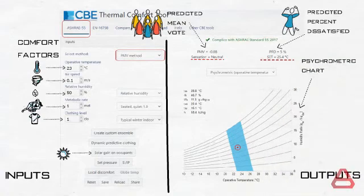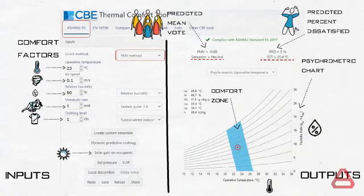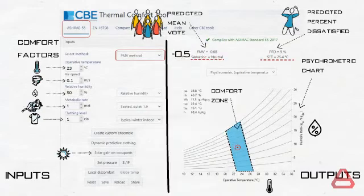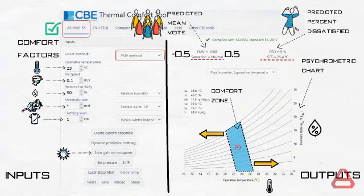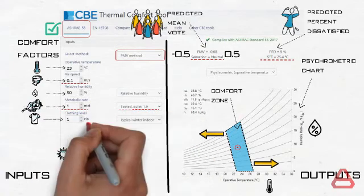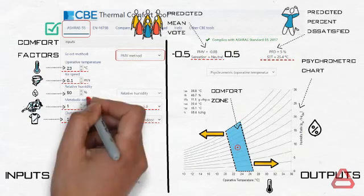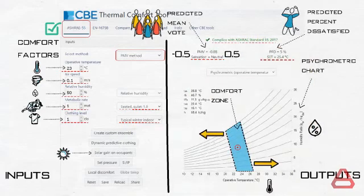This is a psychrometric chart showing the comfort zone highlighted in blue. The psychrometric chart shows air properties in graph form, most importantly dry bulb temperature and humidity. Any value of temperature and humidity inside the comfort zone and with a PMV between minus 0.5 and 0.5 complies with ASHRAE Standard 55. Changing the input variables causes the comfort zone to shift to the right or left depending on the new values. For the case shown, with an airspeed of 0.1 meters per second, a seated activity level, and typical indoor winter clothing, the operating point at 23 degrees Celsius and 50% relative humidity is compliant with ASHRAE Standard 55.